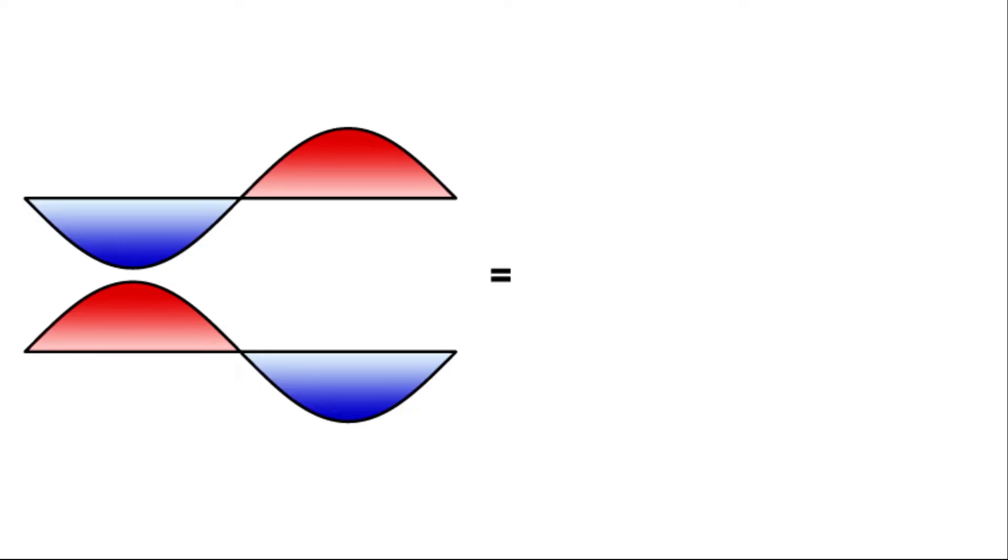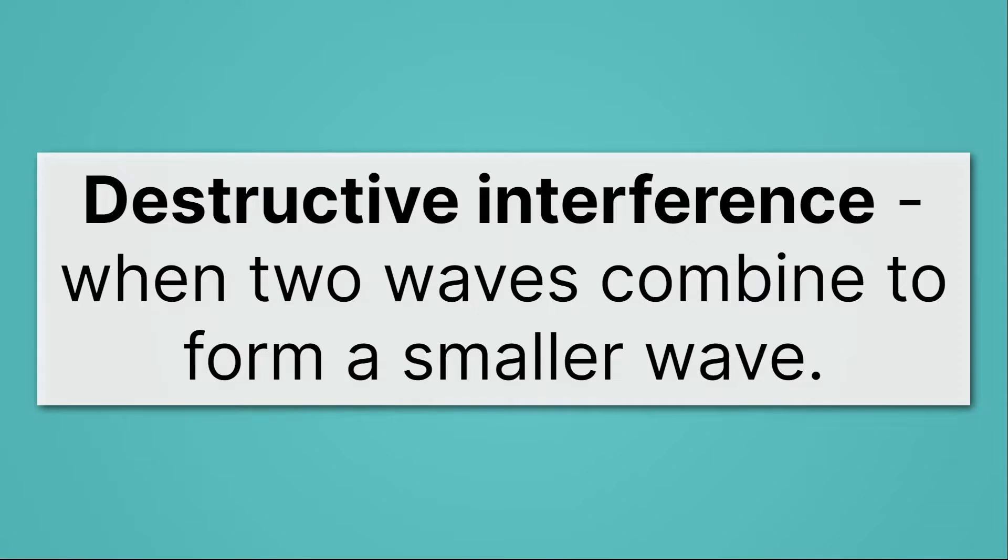On the other hand, if peaks and troughs overlap, as shown here, these two waves combine, and suddenly we don't see any wave at all. That's called destructive interference, when two waves combine to form a smaller wave.